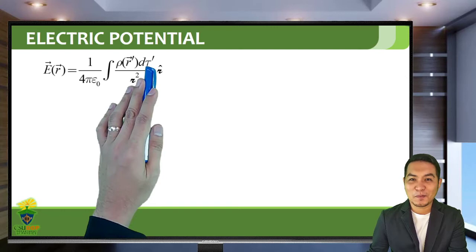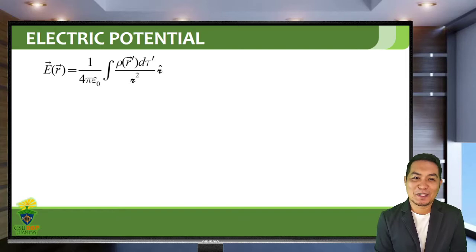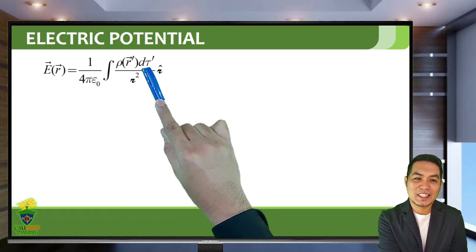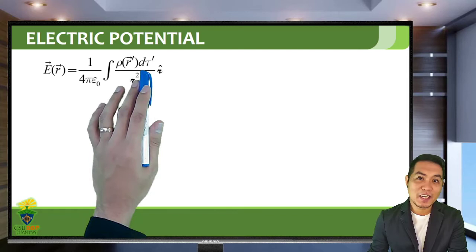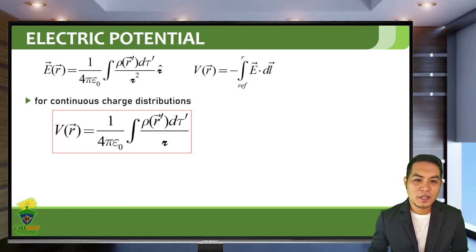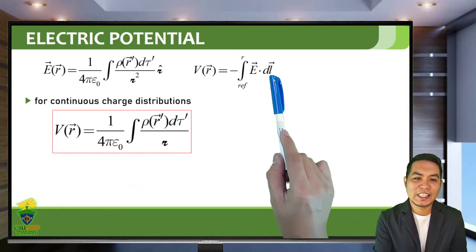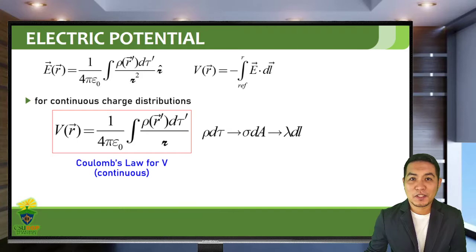The electric potential can also be written in terms of Coulomb's law. Here rho d-tau is our dQ for a volume charge distribution. We need to shift our variable for volume from V to tau since we now use V for the potential. The rho d-tau can be replaced by sigma dA or lambda dL depending on the type of charge distribution. Before we go to the continuous case, let's first have an example for a discrete case.